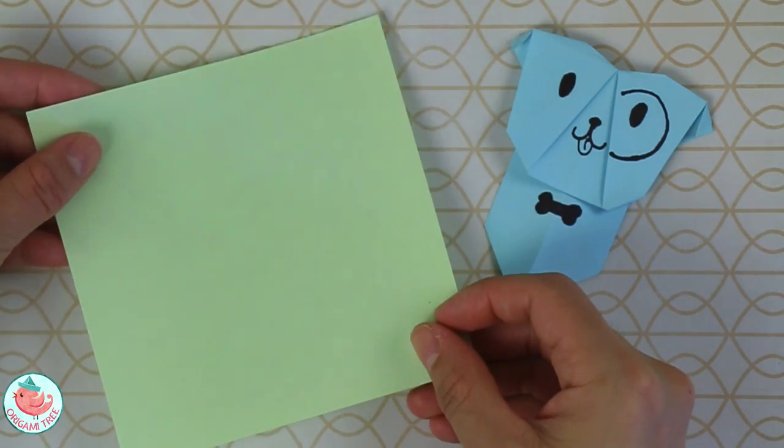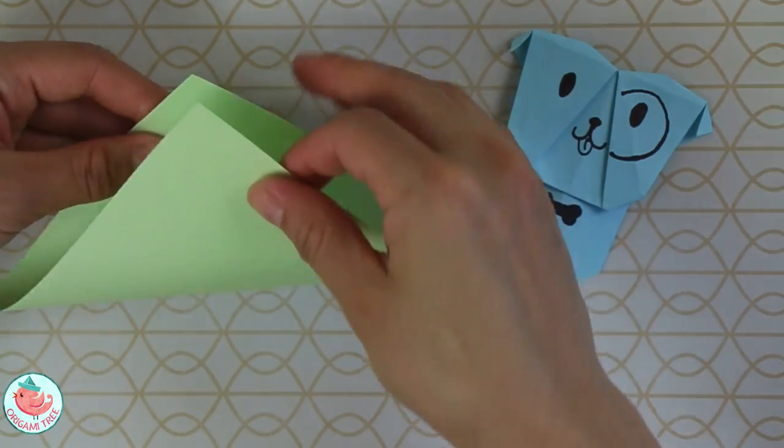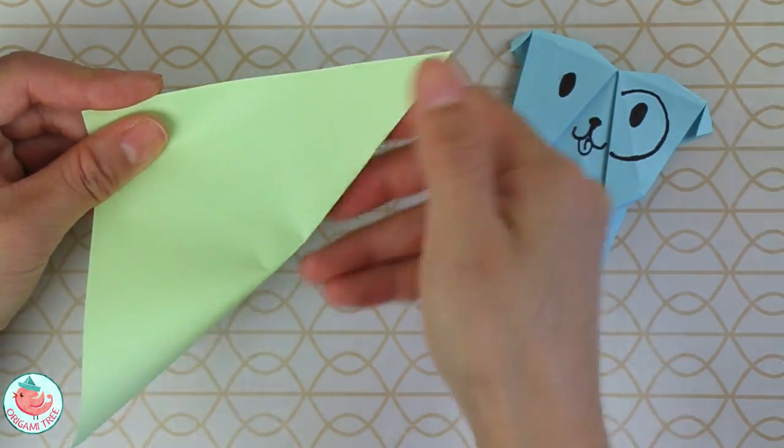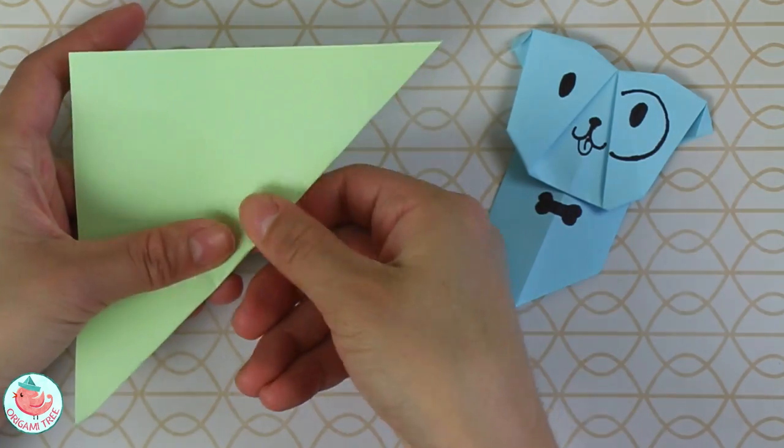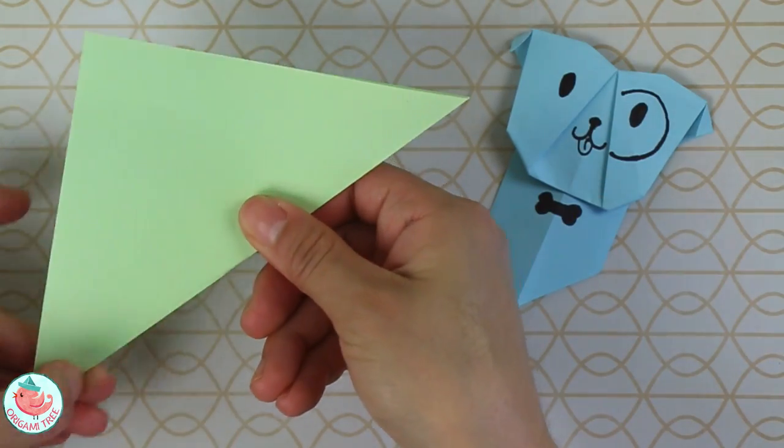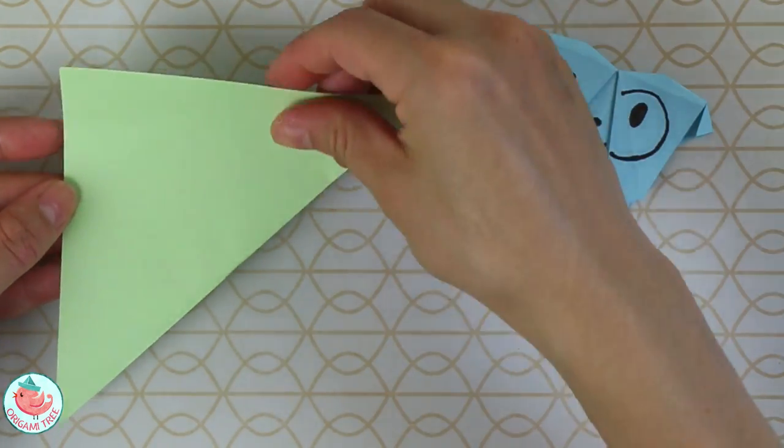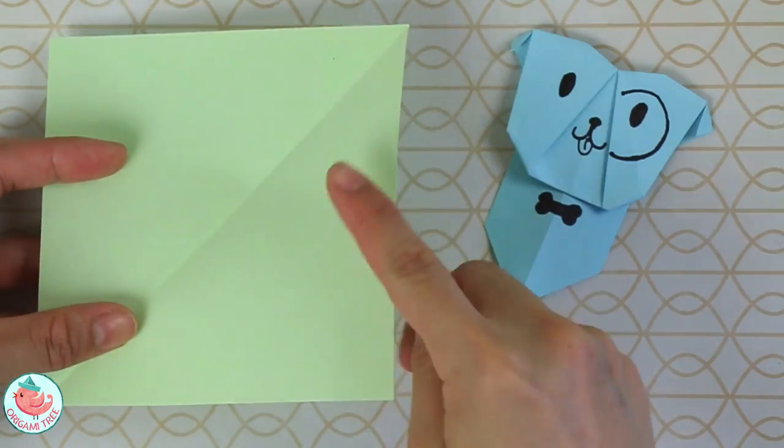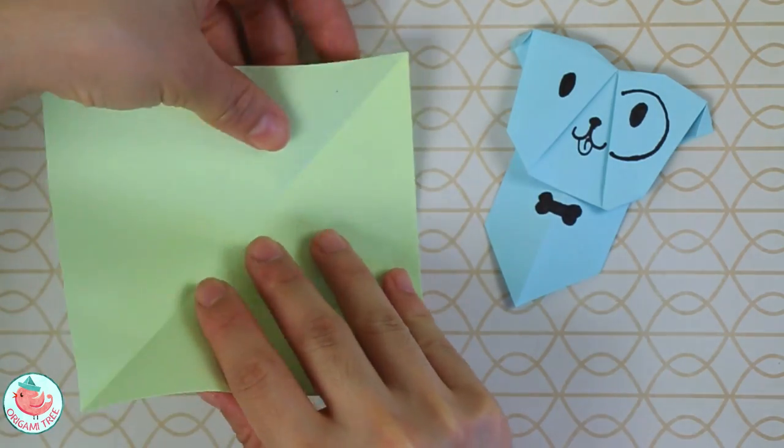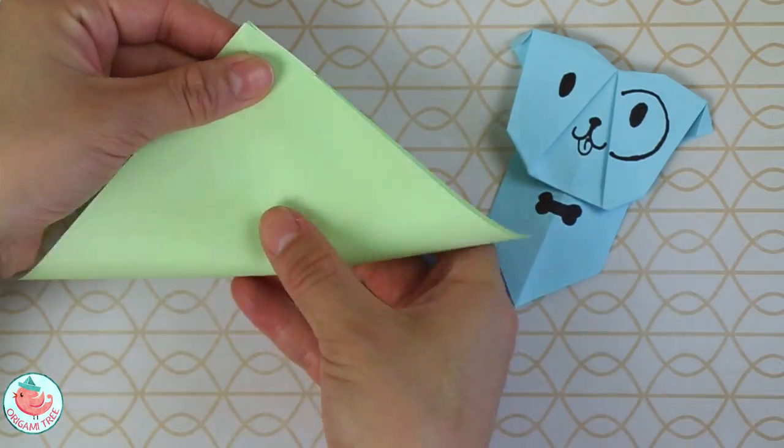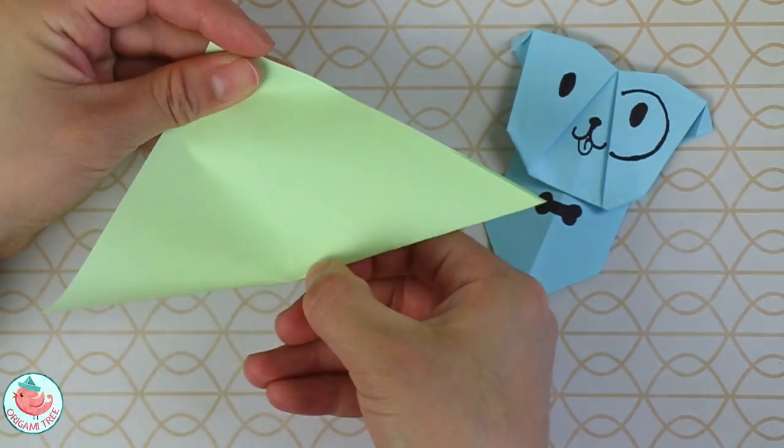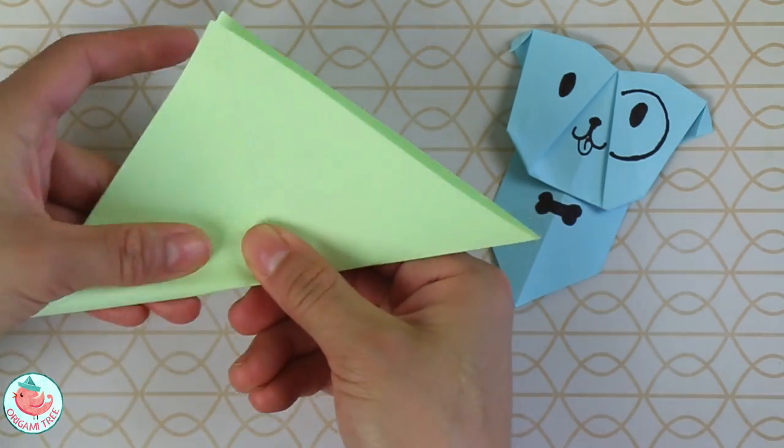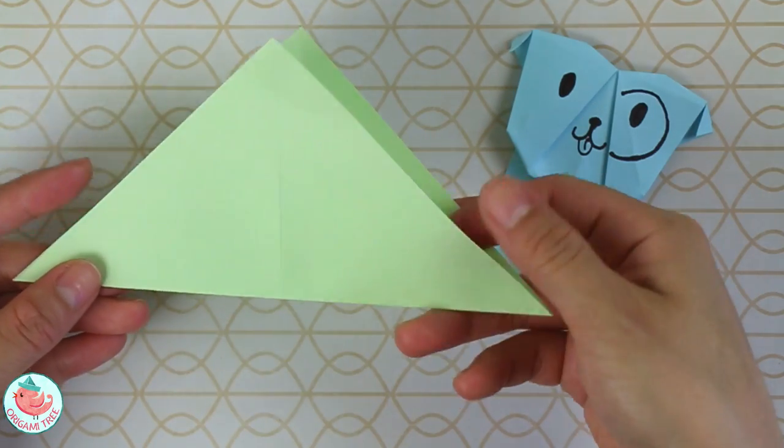The first thing you want to do is take your square sheet of paper and fold it in half diagonally. Unfold. Then repeat the same thing in the opposite direction—just fold it diagonally and crease it in. Unfold.